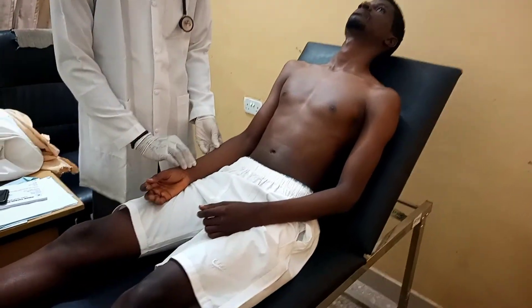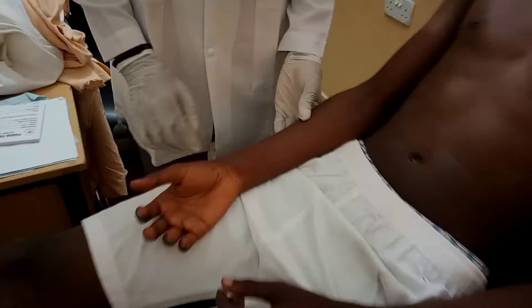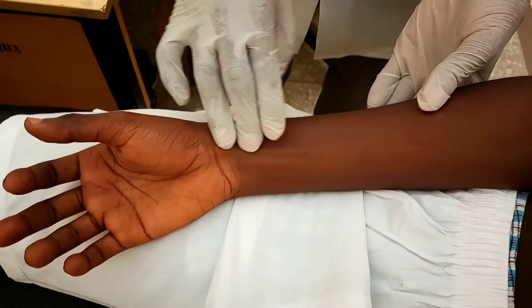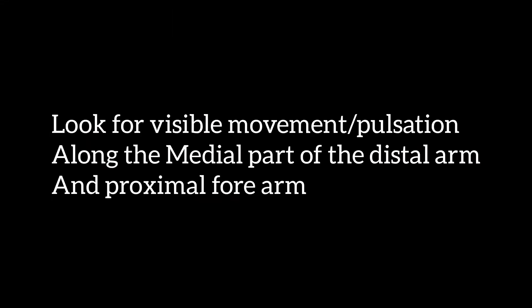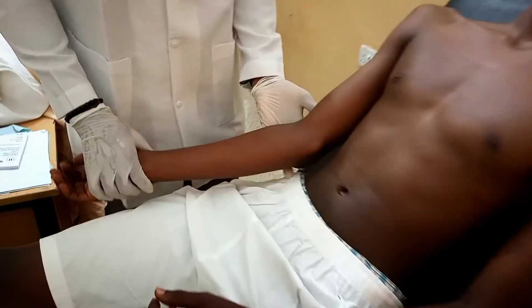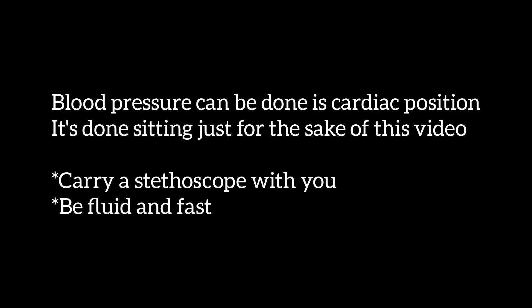These additional signs include pedal edema, central and peripheral cyanosis. We also examine the hands of the patient for splinter hemorrhages, finger clubbing, as well as Janeway lesions or Osler's nodules. The next part of this video will demonstrate cardiovascular examination.